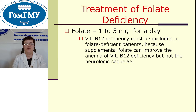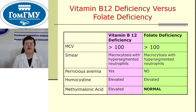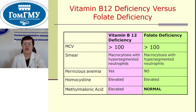Vitamin B12 deficiency must be excluded in folate deficient patients because supplemental folate can improve the anemia of vitamin B12 deficiency but not the neurologic sequelae. To differentiate vitamin B12 deficiency versus folate deficiency: mean corpuscular volume is more than 100 in both. Smear shows macrocytosis with hypersegmented neutrophils in both. Homocysteine is elevated in both. However, methylmalonic acid is elevated in vitamin B12 deficiency and normal in folate deficiency anemia.